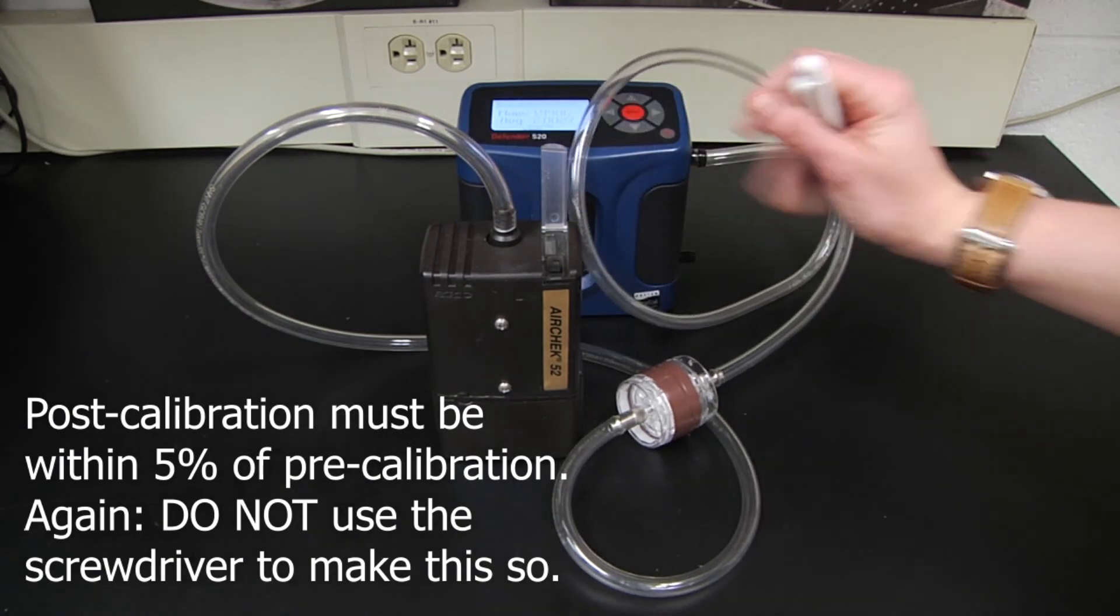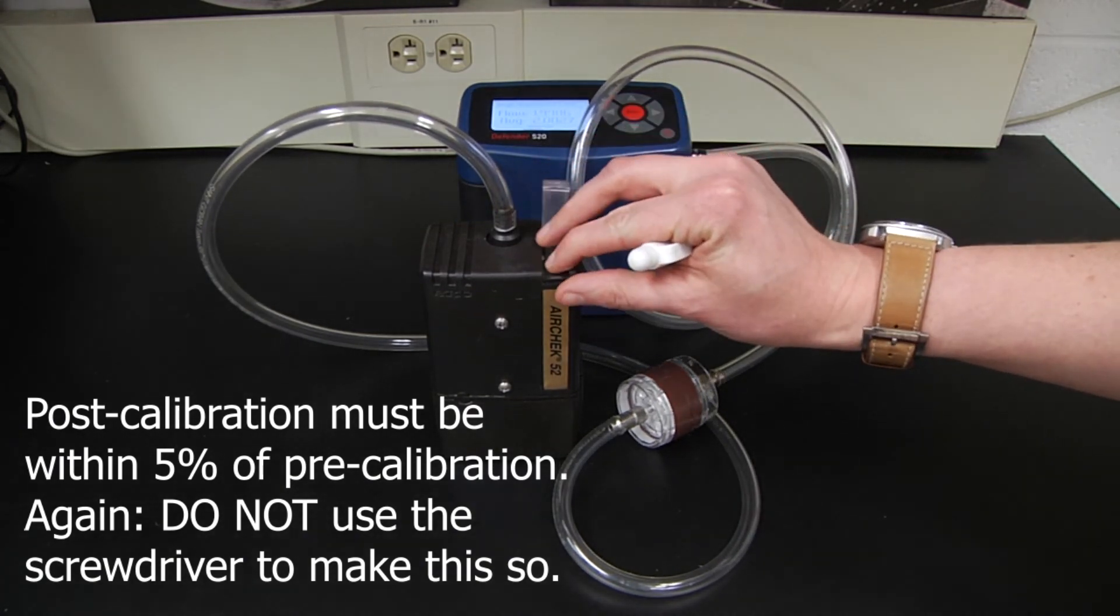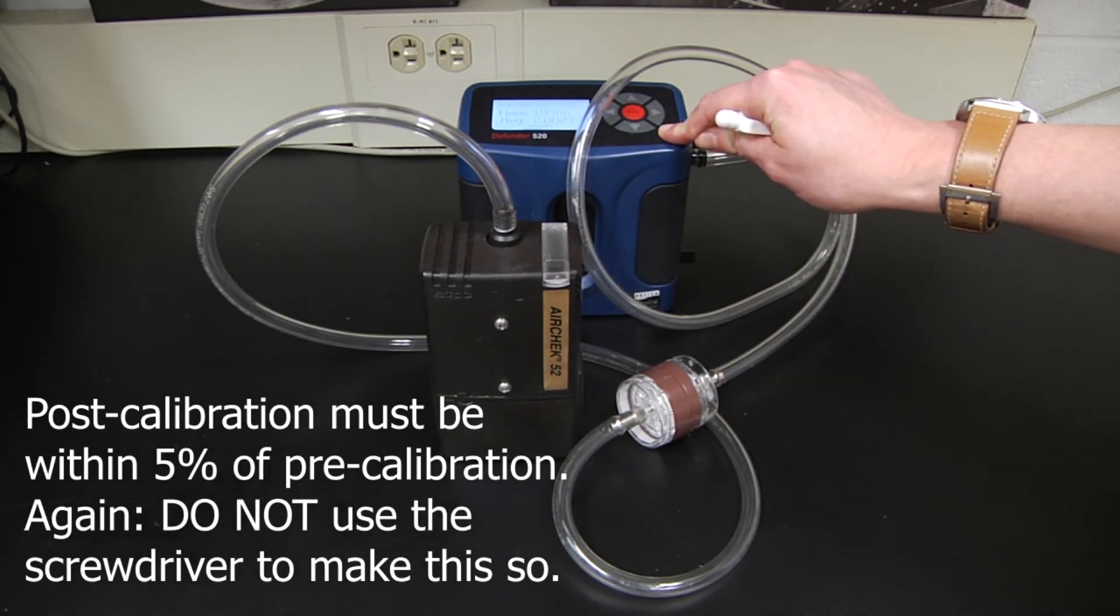If your flow rate is not within plus or minus 5% of your pre-sampling calibration value, then you must discard your sample.